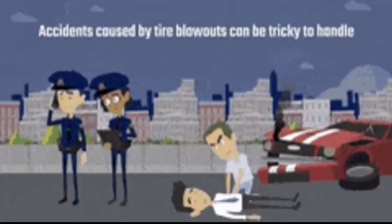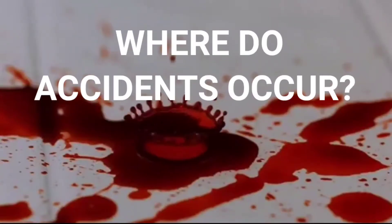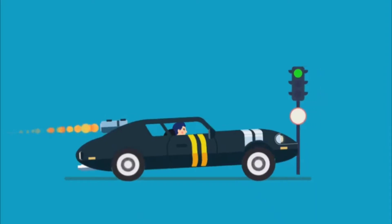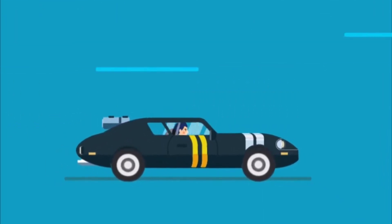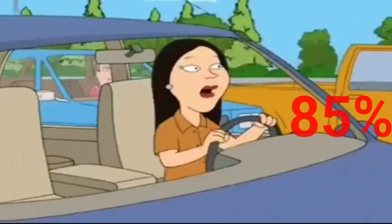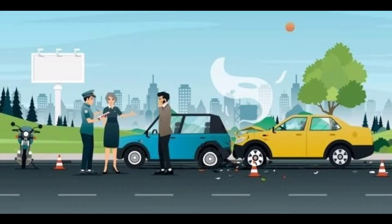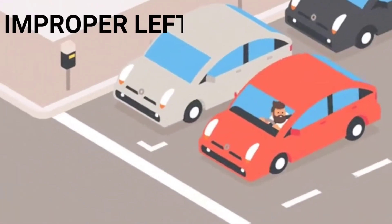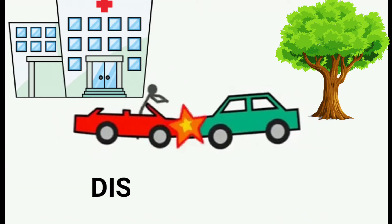Accidents caused by tire blowouts can be tricky to handle. Around 15% of fatal car crashes occur at intersections, while the remaining 85% take place on the open road. However, many non-fatal car crashes do take place at intersections as a result of improper left turns, violations of traffic laws, speeding, and distracted driving.